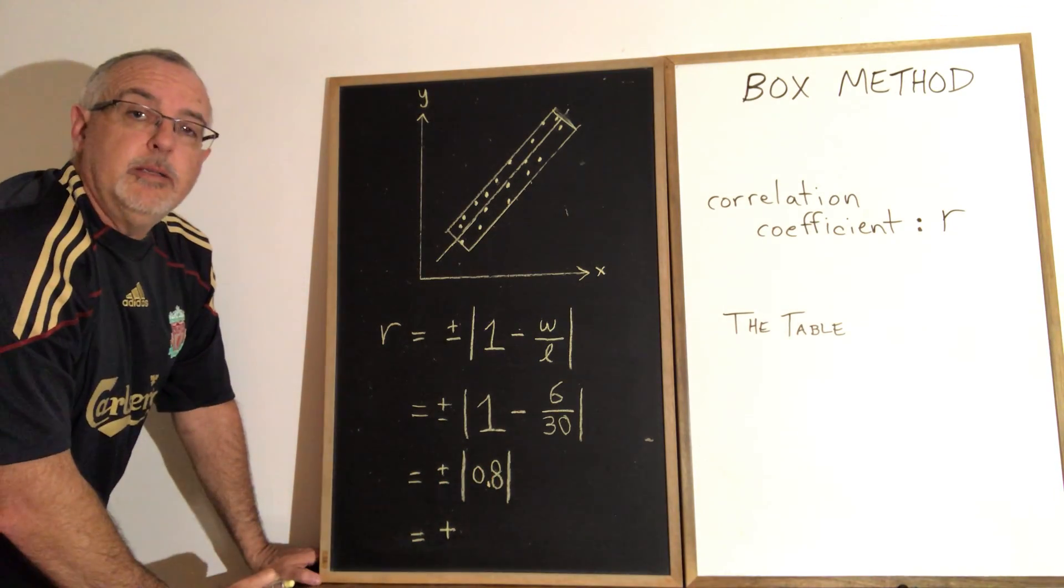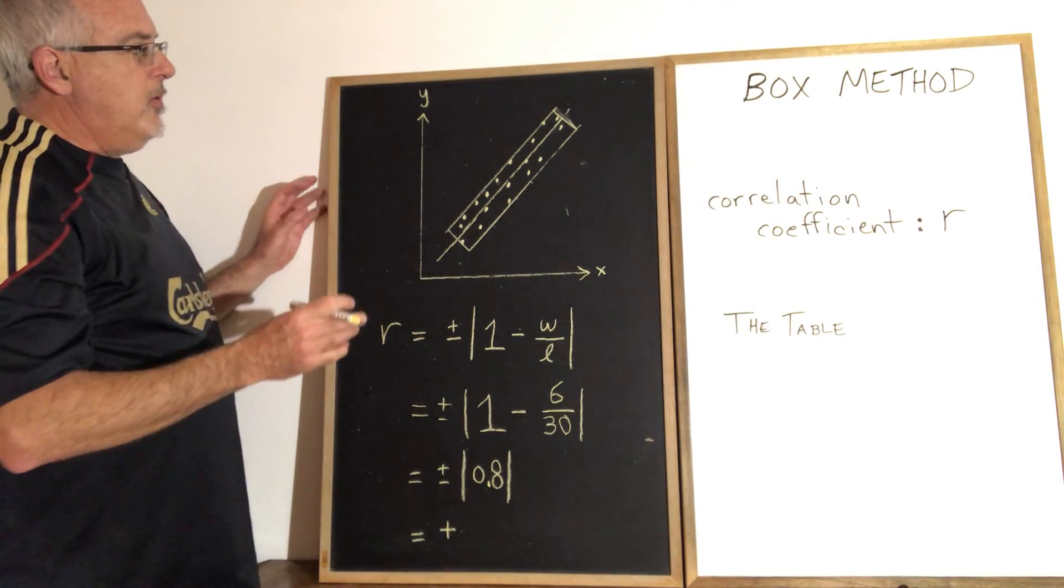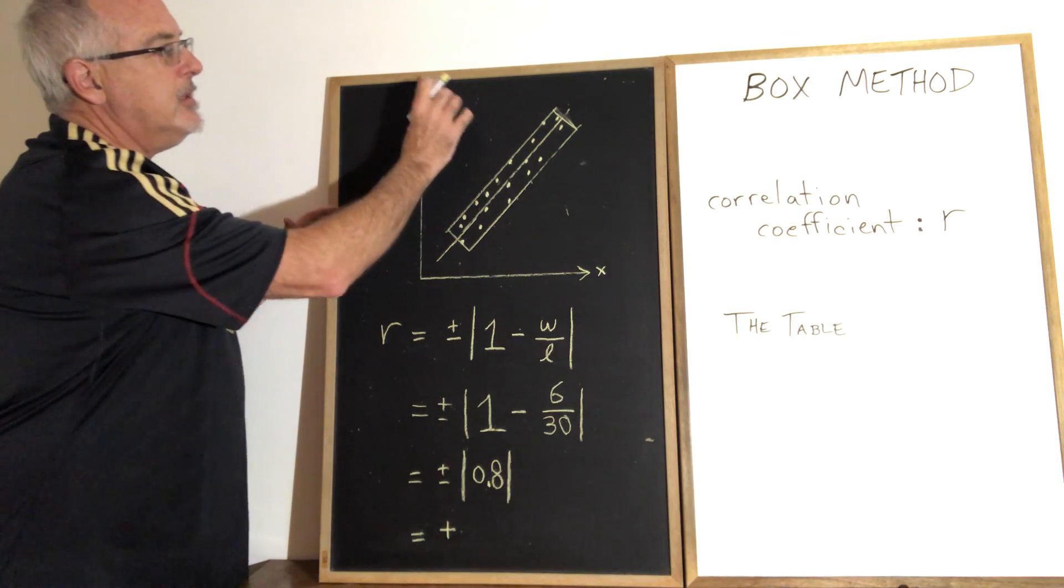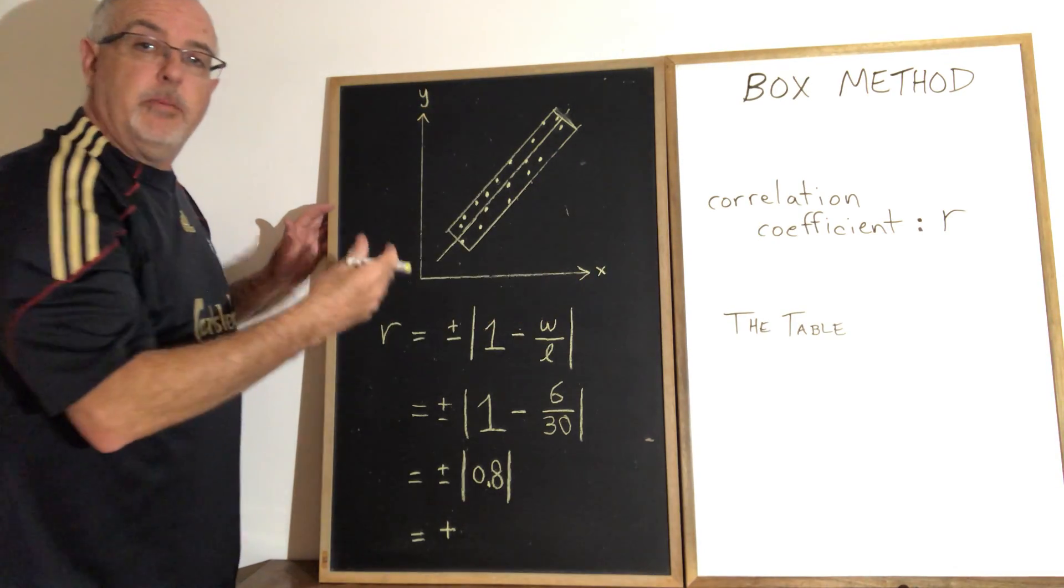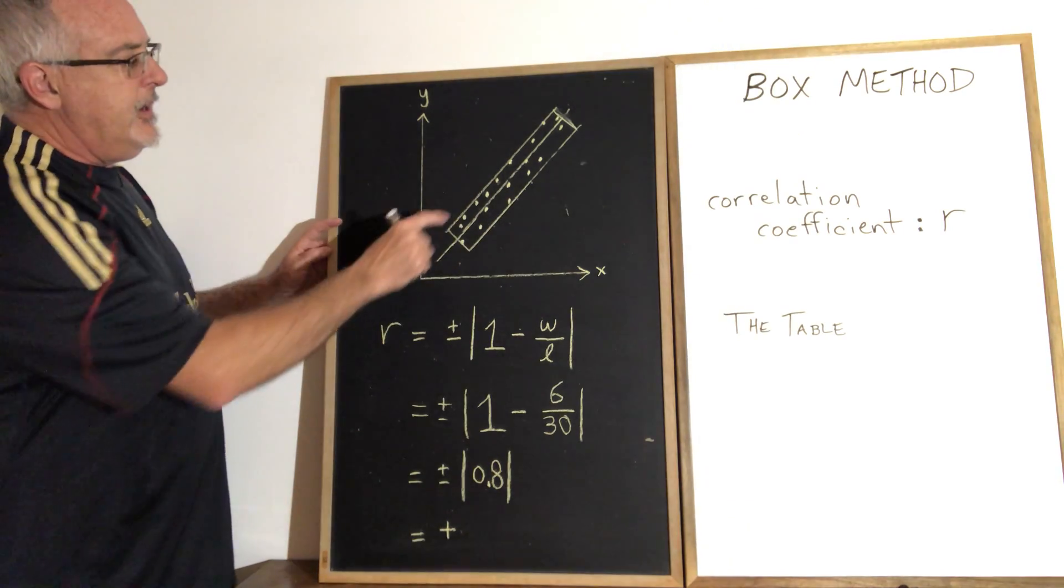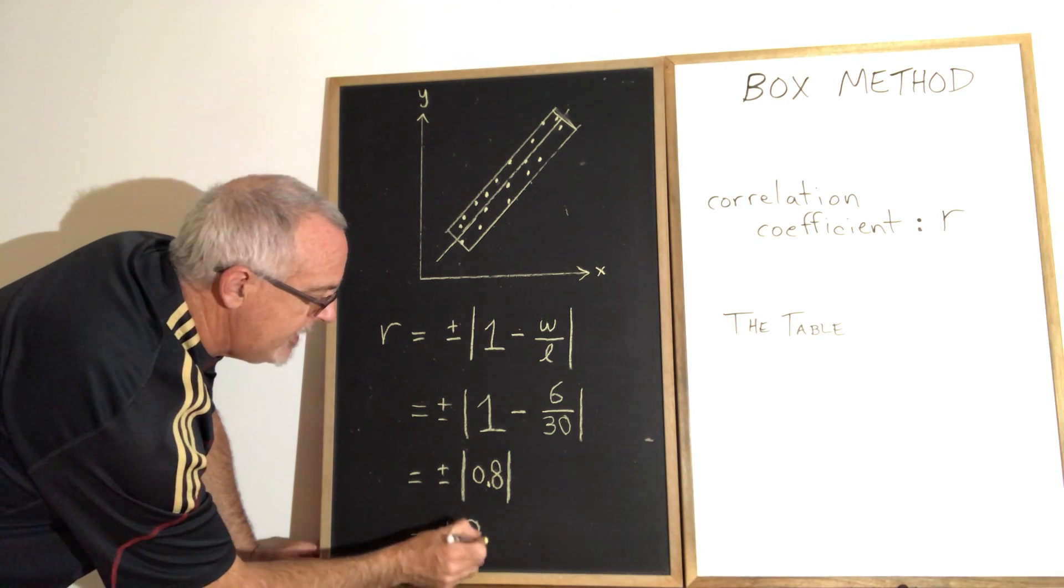The reason for the plus or minus is because the r-value works like the slope. If it has a positive slope, it's going to be a positive r-value. And if the dots and the line of best fit form a negative slope, it will be a negative r-value. We can see from our graph that this is going to be a positive slope. So my answer is positive 0.8.